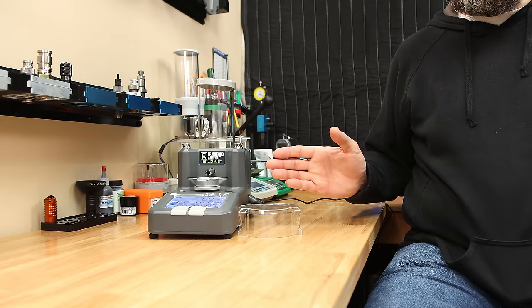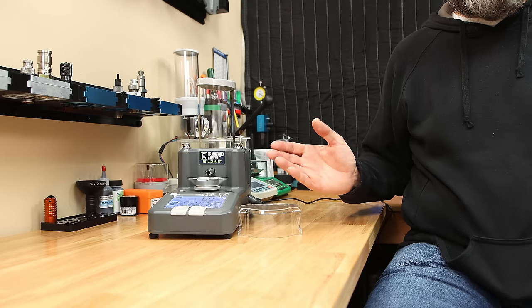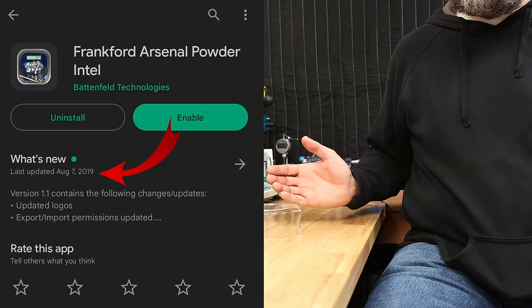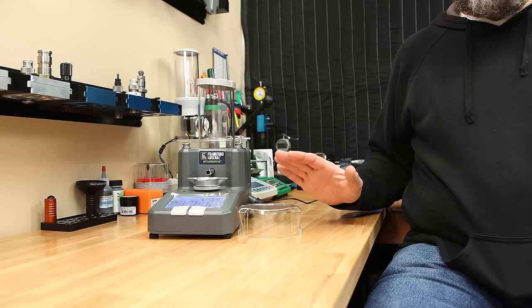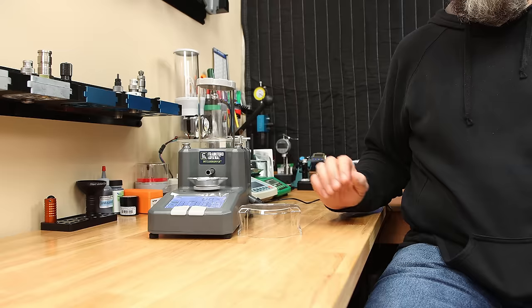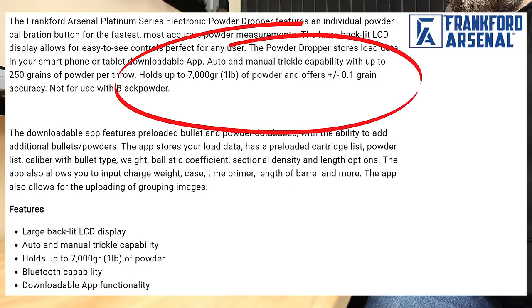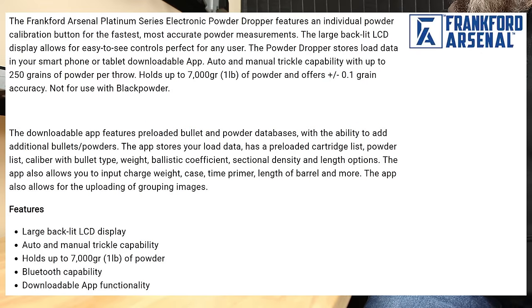The Frankford Arsenal IntelliDropper isn't really new to the market at this point. I think it's actually been available for at least three years, maybe longer. On the surface, this powder dispenser may not seem to be too out of the ordinary. It holds up to 7,000 grains, which is a pound of powder, and has a plus or minus 0.1 grain accuracy on the scale.